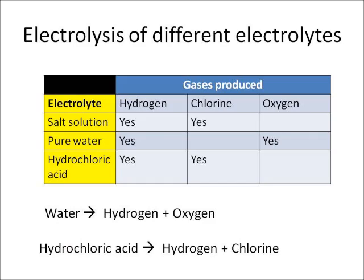This table shows the different gases I'm going to produce depending on the electrolyte I use. If I use salt solution I'm going to produce hydrogen at one electrode and chlorine at the other electrode.